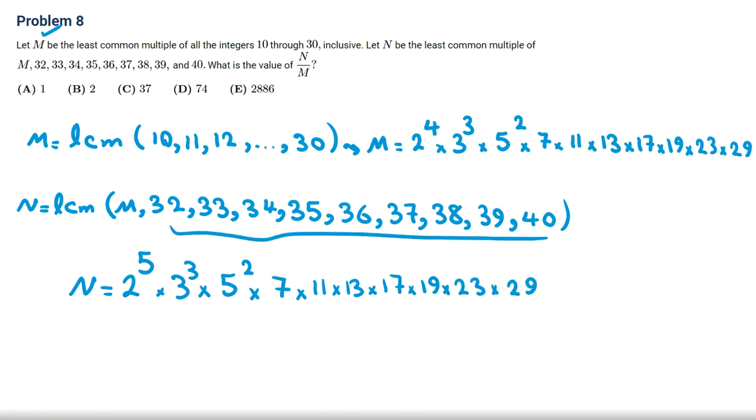Now here, we should check. Do we have any prime numbers? 32, not. 33, 34, 35, 36. 37 is prime. So now, if we divide N over M.